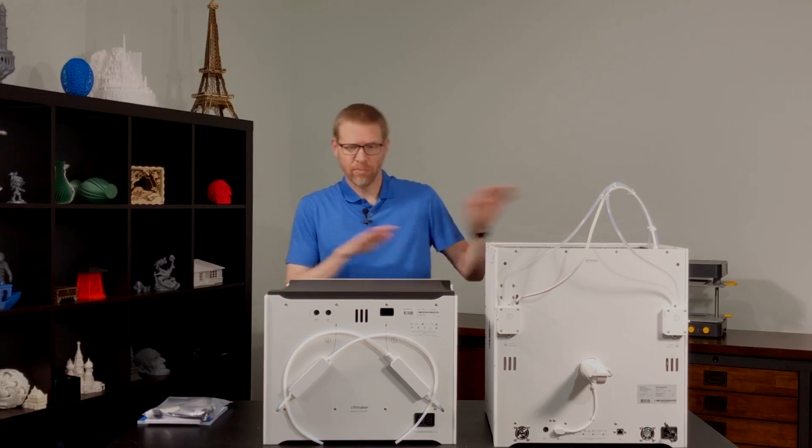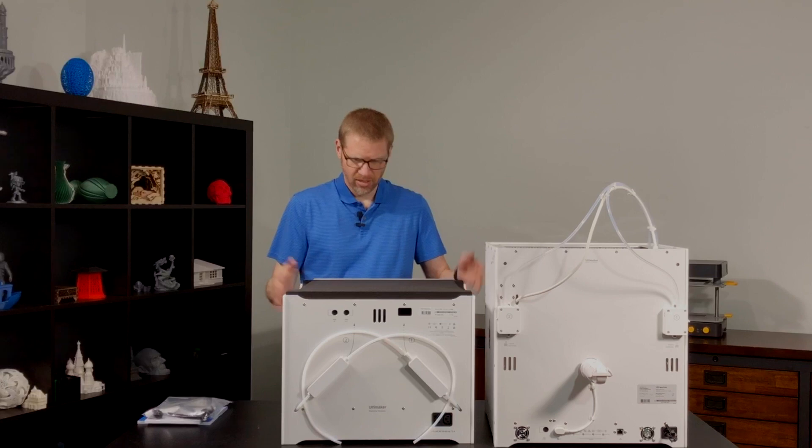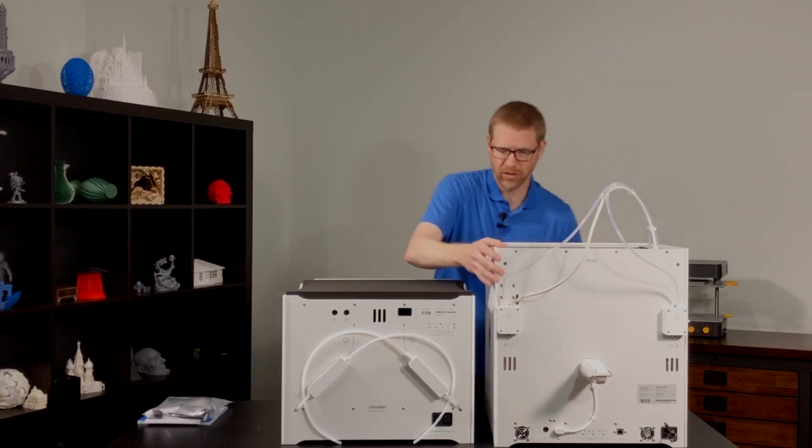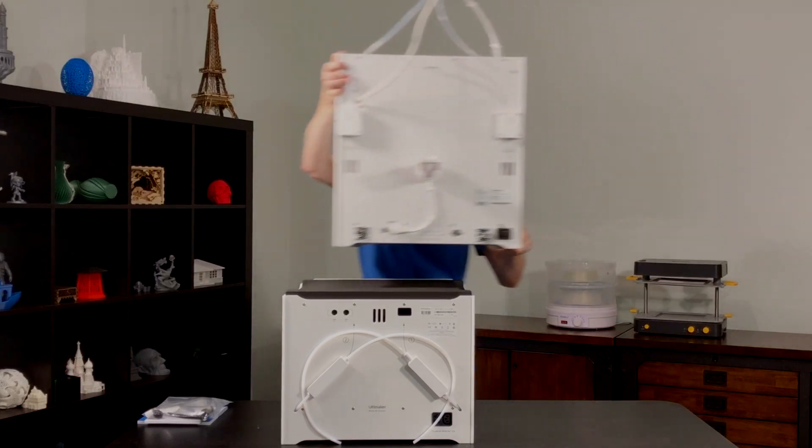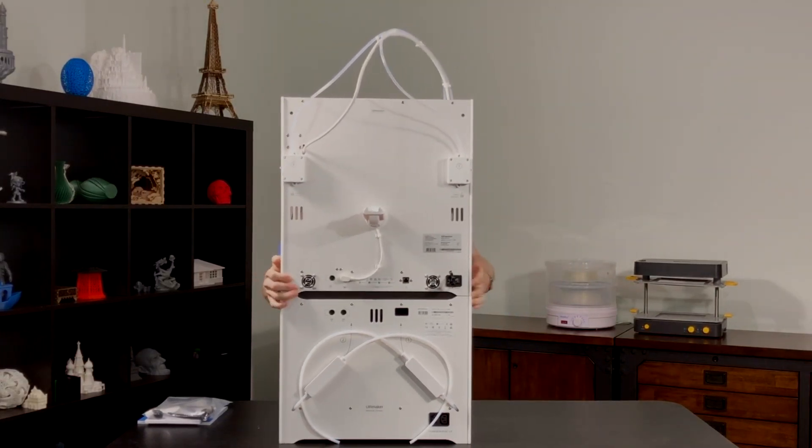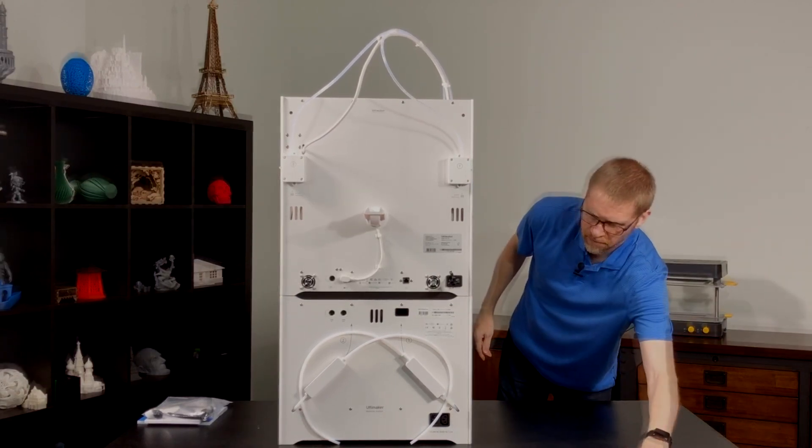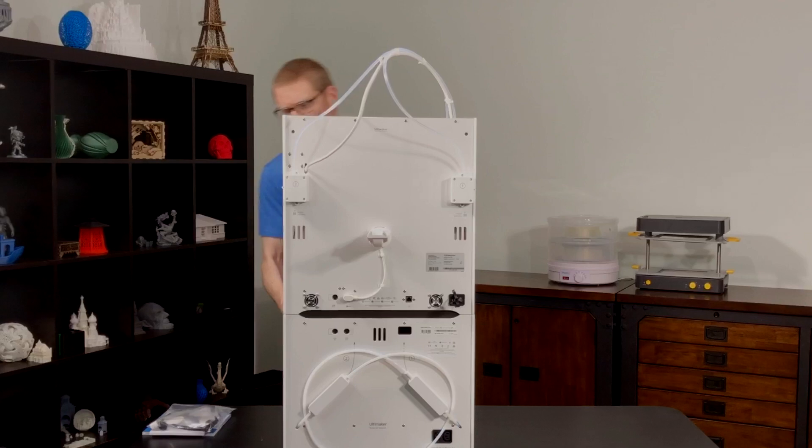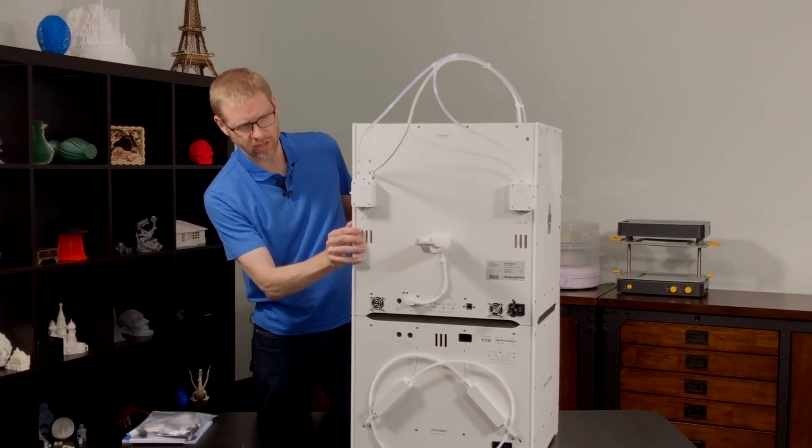I've got these turned around backwards because I'm going to want to show you the cable hookups on the back once we get them on top of each other. So here's the material station. I'm just going to lift the S5 on top of that. And lower our table here. As you can see, they just sit right on top of each other, no hardware required to connect these two units.